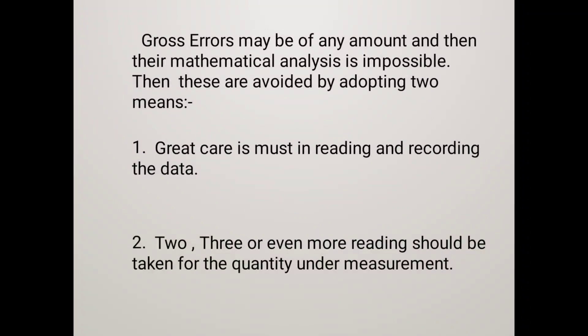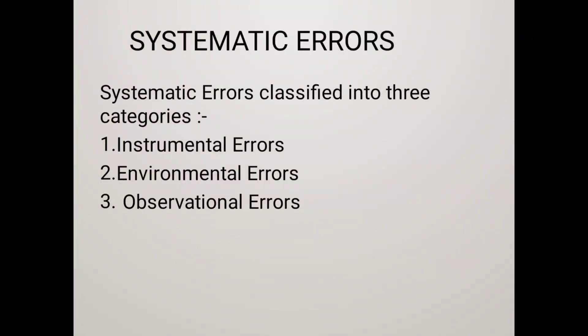Next is Systematic Error. Systematic Errors mainly result from the shortcomings of the instrument and the characteristics of the material used, such as defective or worn parts, aging effects, and environmental effects. A constant uniform deviation in the operation of an instrument is known as Systematic Error. It is classified into three types: Instrumental Error, Environmental Error, and Observational Error.